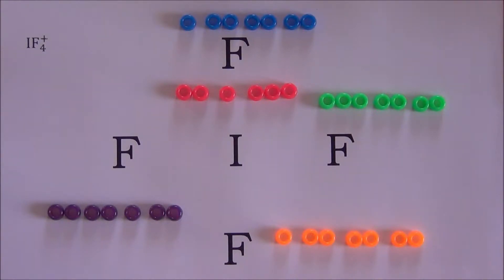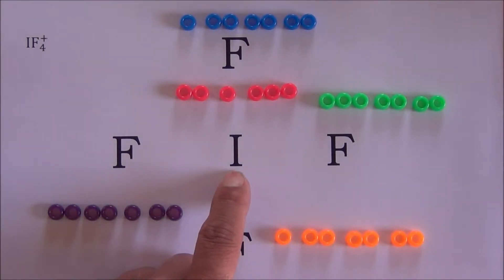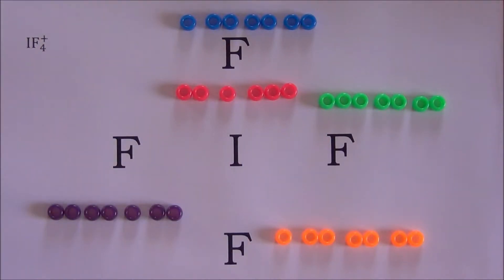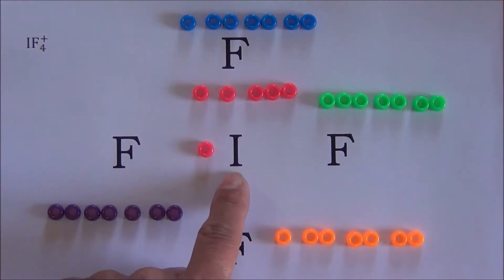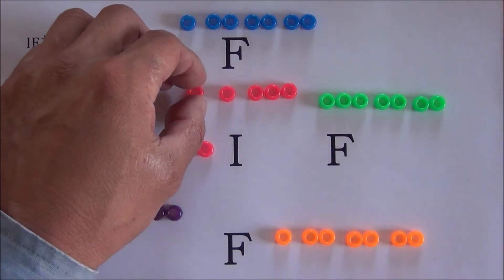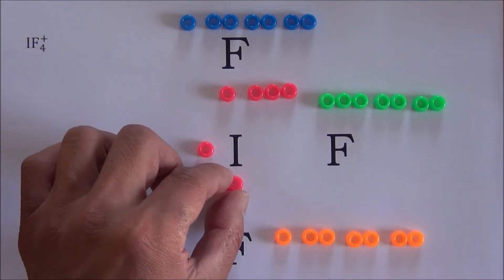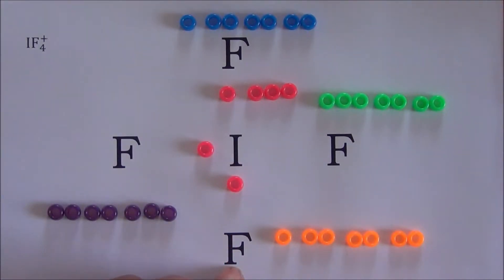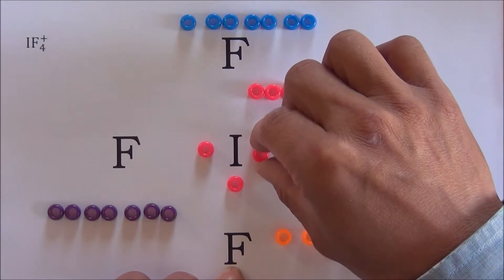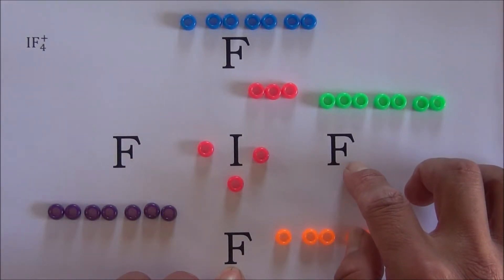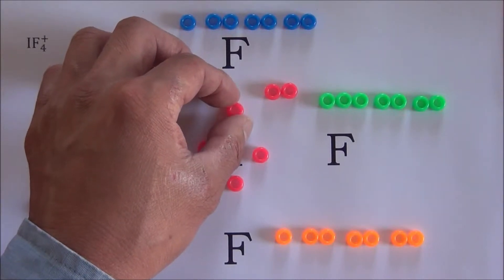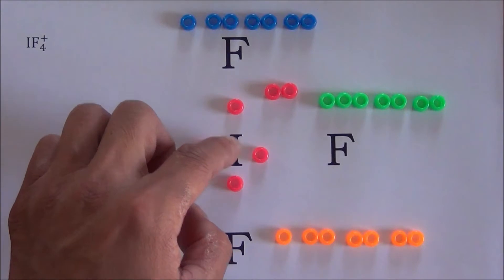Now let me show you how I place the electrons next to each atom. You can start from any atom — let's start from the central atom. From the skeleton structure, the central atom has four neighbors. Remember, we need one valence electron from the central atom for each neighbor. We will take the first valence electron of the central iodine atom and place it between the central atom and its neighbor on the left, the second between the central atom and its neighbor at the bottom, the third between the central iodine atom and the fluorine atom on the right, and the fourth between the central atom and its neighbor on top.